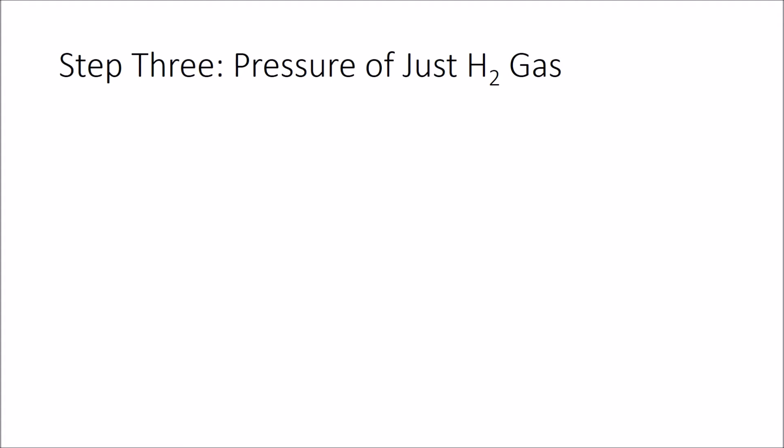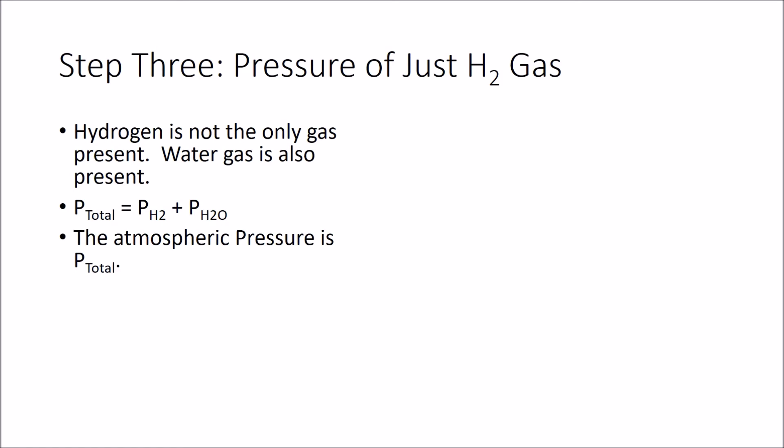Let's get the pressure of just the hydrogen gas that we made. Hydrogen is not the only gas that we made. Water gas is also present. And so the total pressure, according to Dalton's Law of Partial Pressures, is equal to the sum of hydrogen gas and water gas. Our atmospheric pressure is our total pressure. The way that we get that is either by reading a barometer somewhere in the room or by going online, checking weather underground, and finding out what the pressure is.